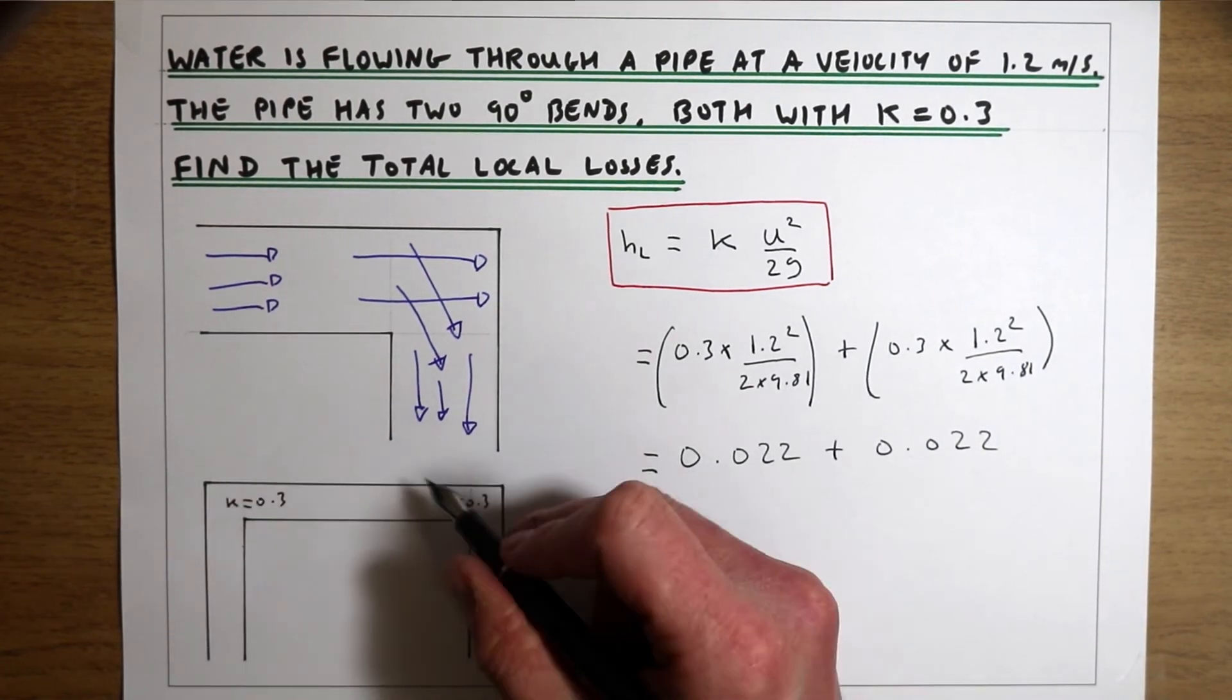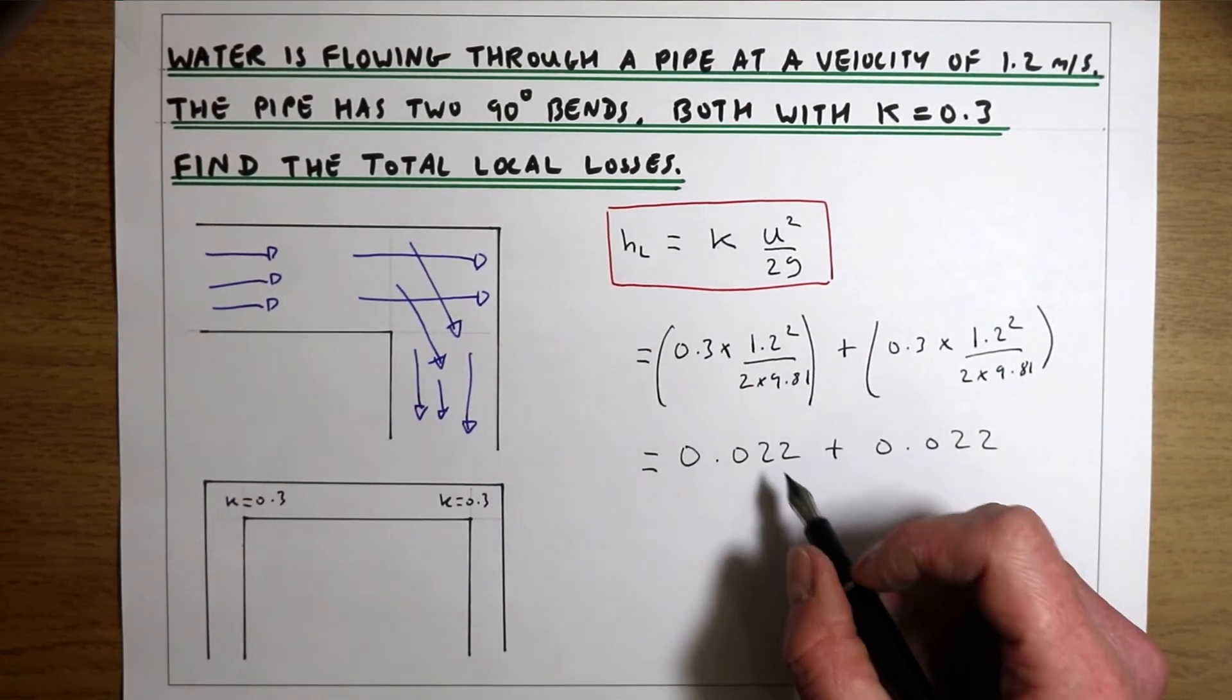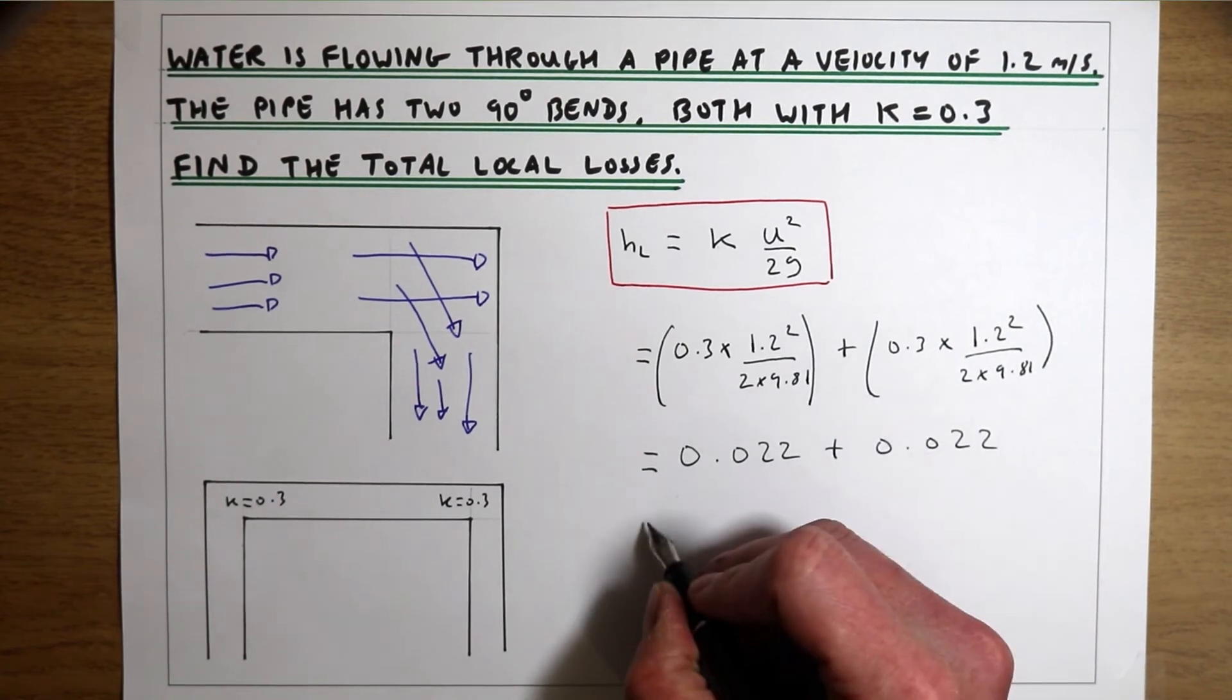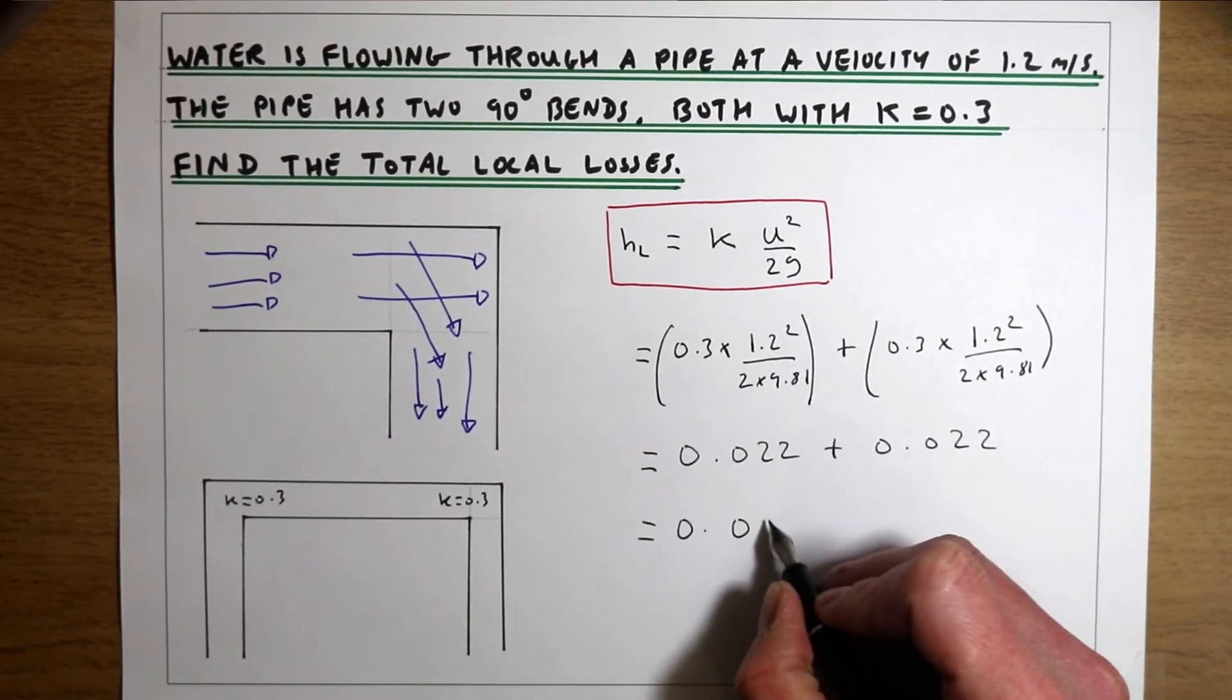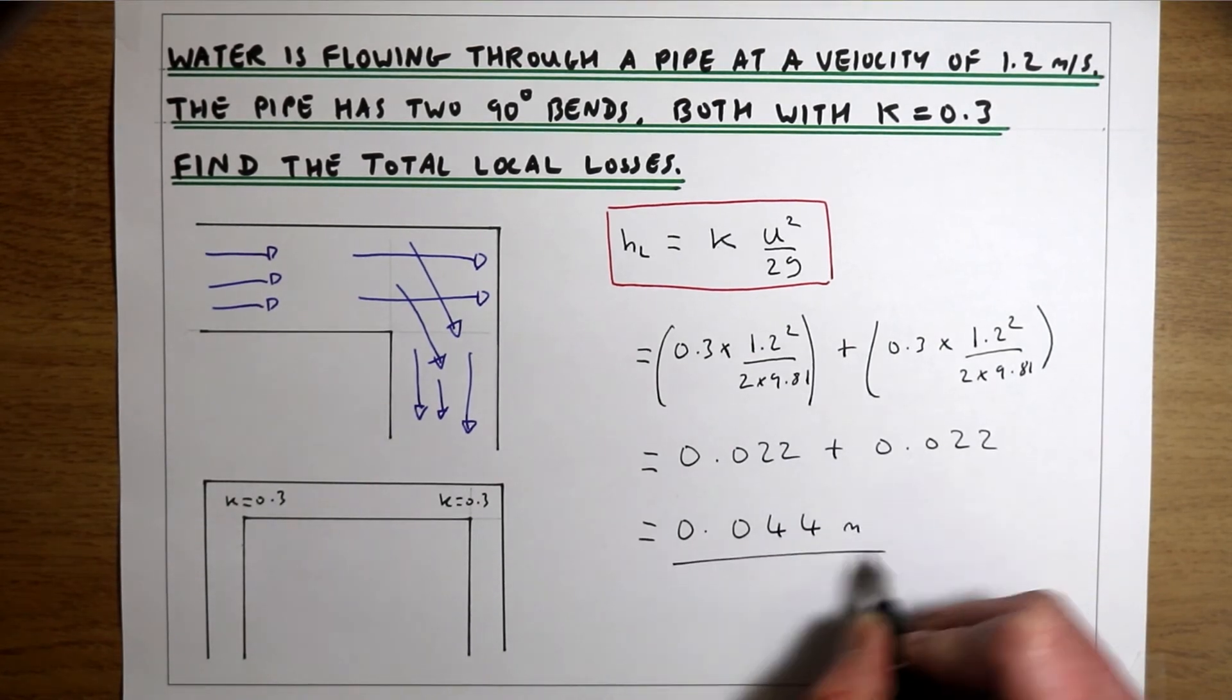So each time water goes around one of these 90 degree bends, we're losing 0.022 metres of head, and that gives us a total loss due to those two bends of 0.044 metres.